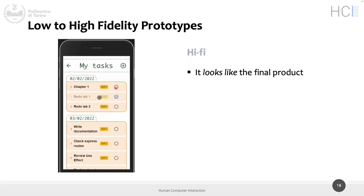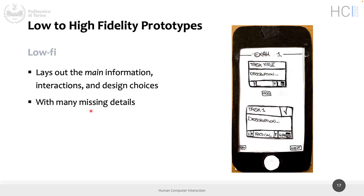The high-fidelity prototype looks like the final product but is still a prototype - it's not feature complete, doesn't have login, because you don't need login to test the prototype if you're not innovating on the login form. You assume you're already logged in. This was made in code, while the low-fidelity prototype was made on paper. Both are prototypes at different stages.